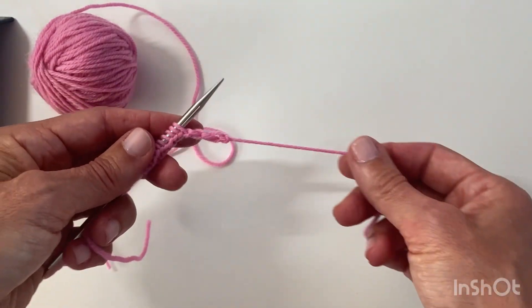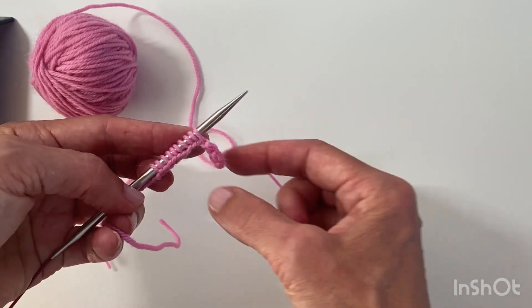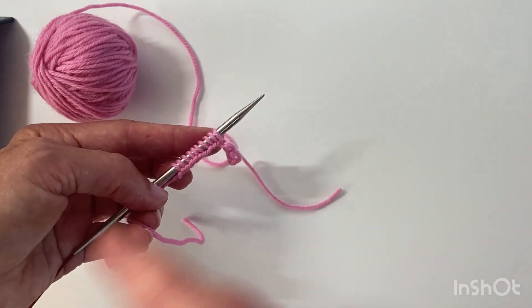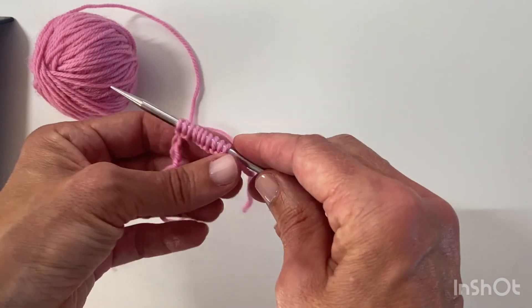So that means when I go to unravel, I know that this is the end that I need to unravel from. And if I unpick from here, it will just rip out really easily. So that's the crochet provisional cast on.